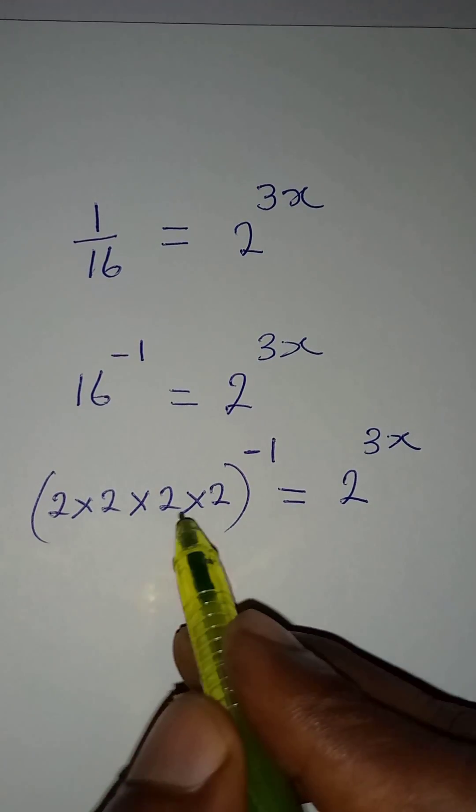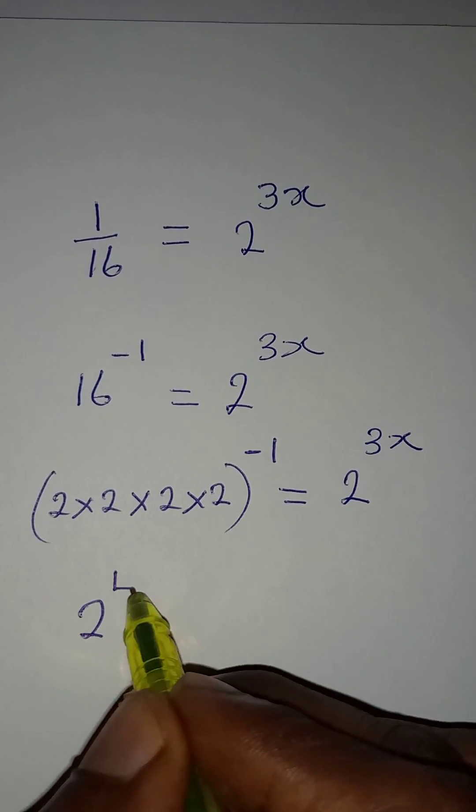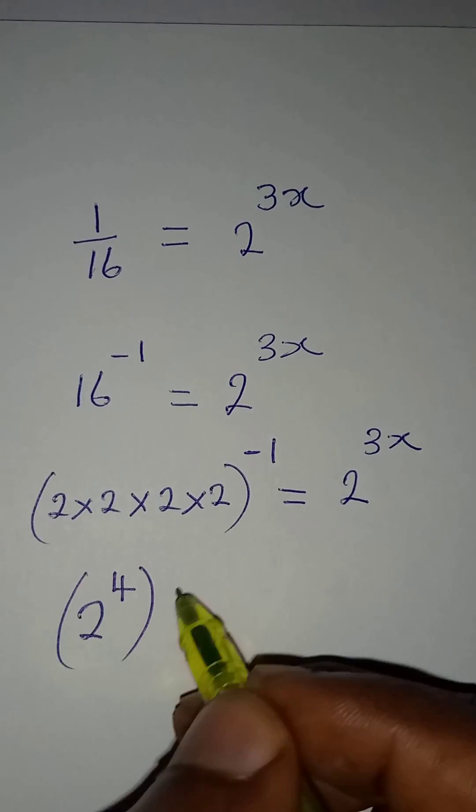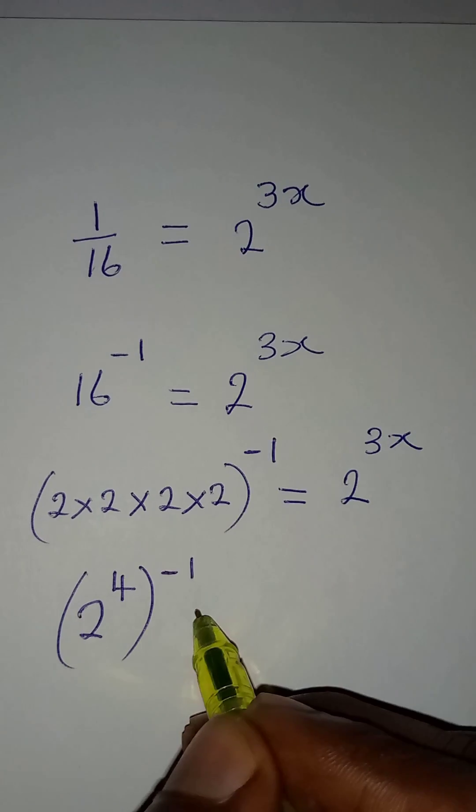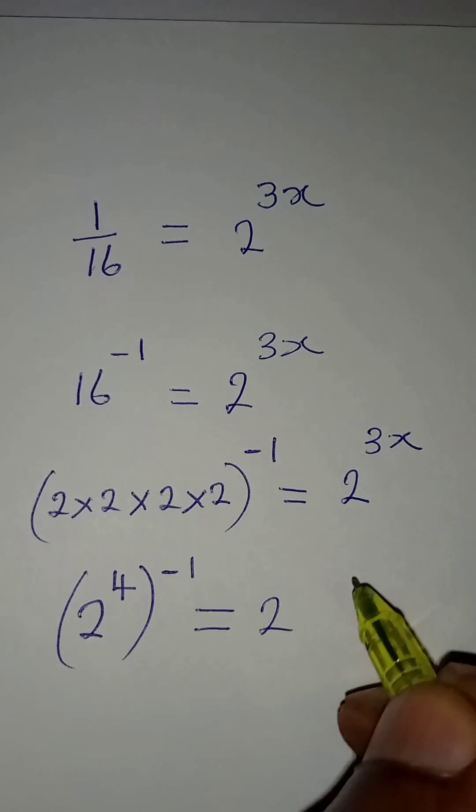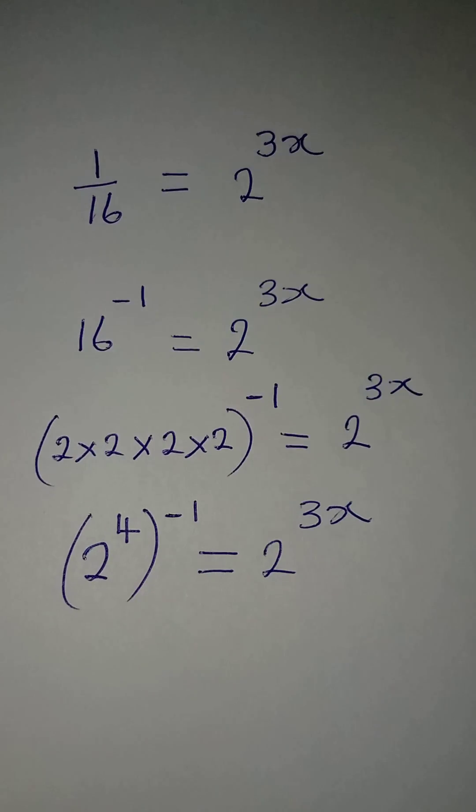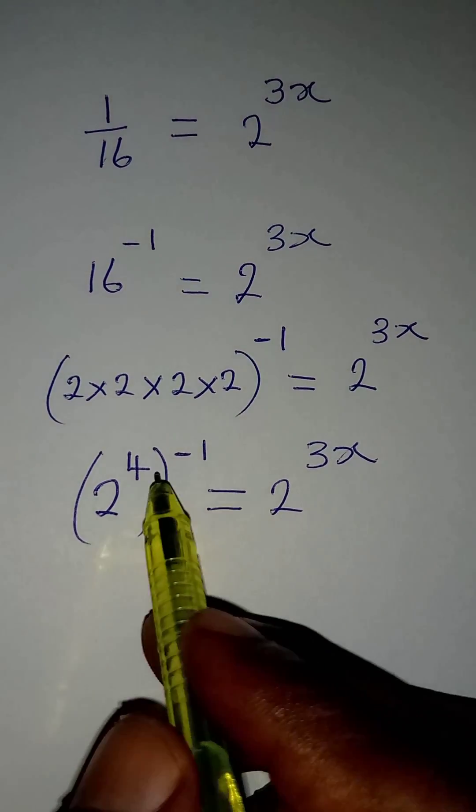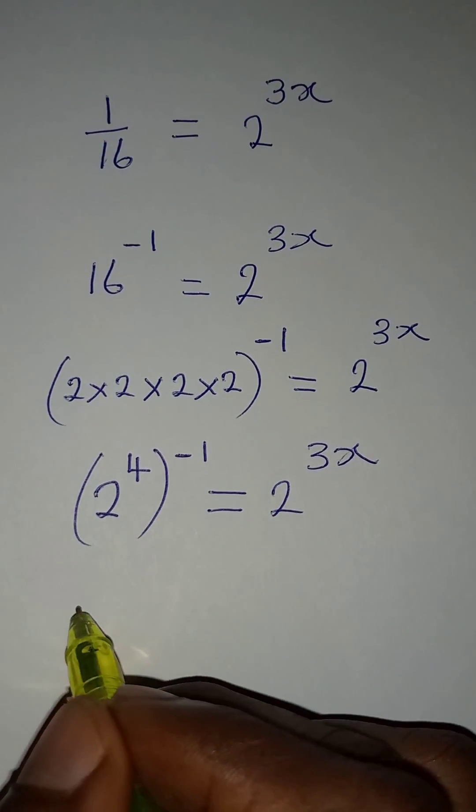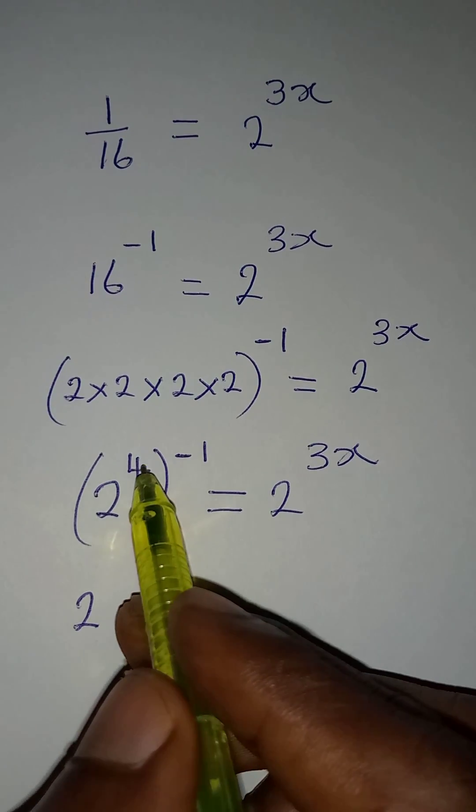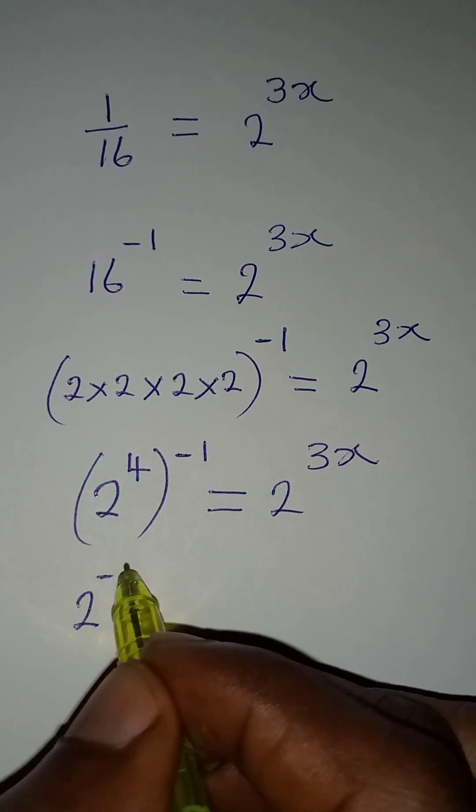Now, 2 in 4 places is the same thing as 2 to the power of 4. Then, this is raised to the power of negative 1, which will be equal to 2 to the power of 3x. Now, the next thing I am going to do is to open this bracket by multiplying the powers. So, I have 2. Then, 4 times minus 1 is minus 4.